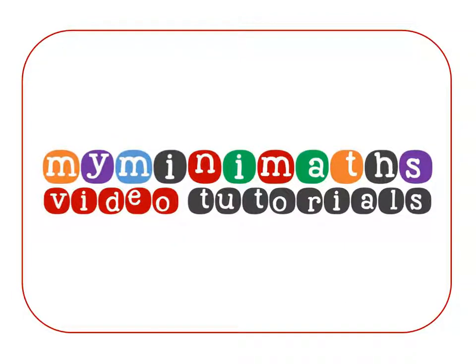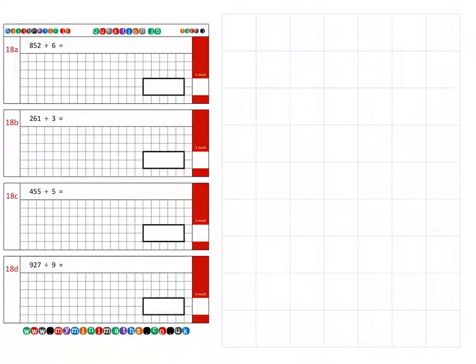Hello and welcome to today's MyMiniMaths.co.uk video tutorial. Today we're looking at arithmetic practice question 18, which is short division. Off we go with the first question, 18a: 852 divided by 6.